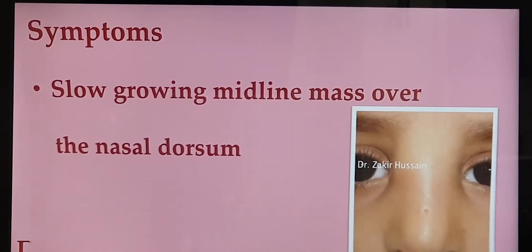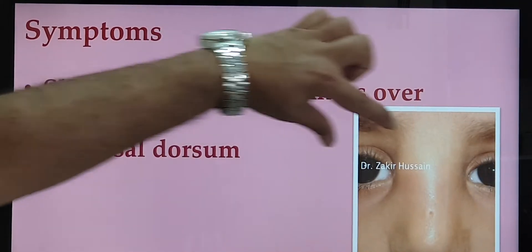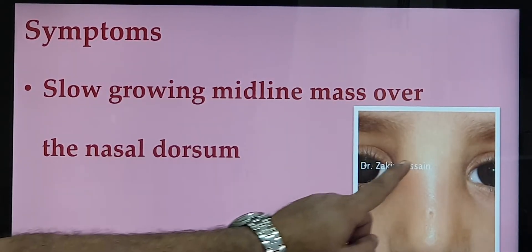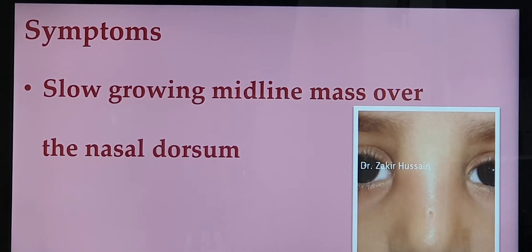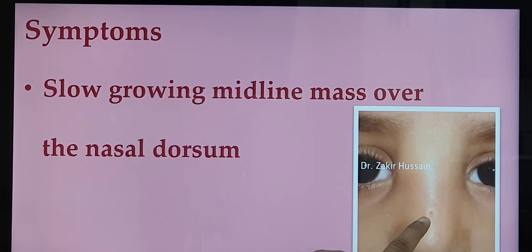The common presentation will be a slow growing midline mass, which is seen over the nasal dorsum. And if you can see here, you can see a small opening — this is the second variety which I have shown you. Sometimes they say there is a small discharge on and off, and you can see tough hair sometimes near the opening. That is how it presents.